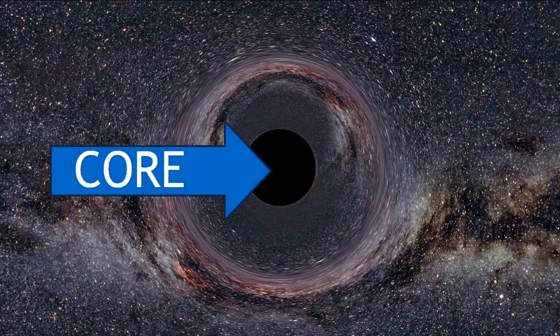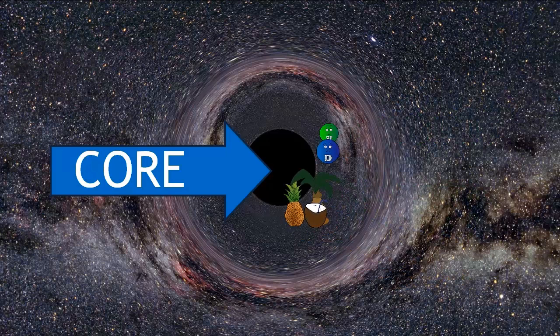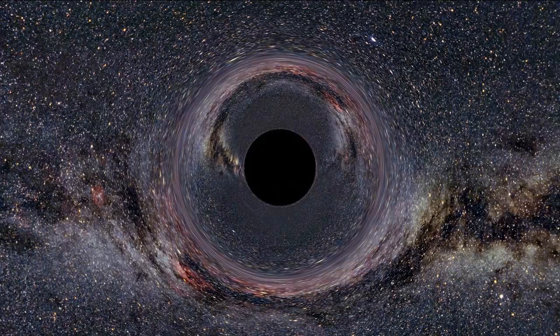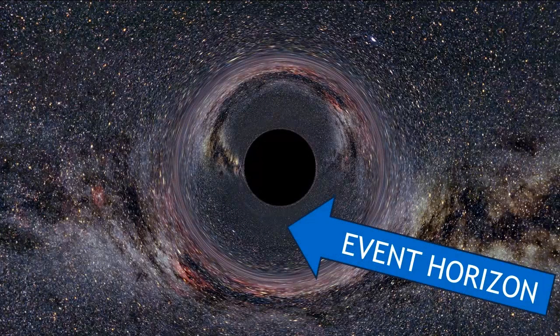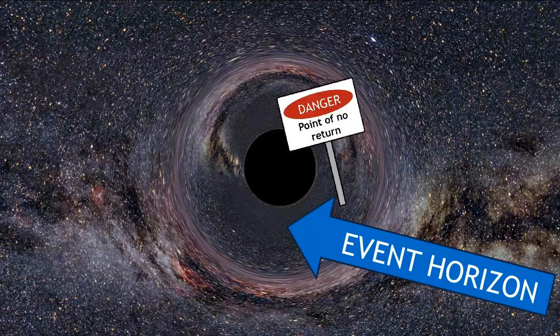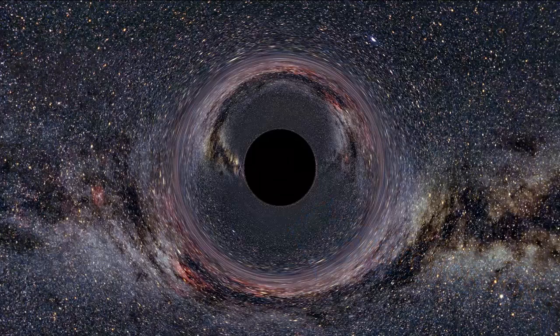The core of a black hole is possibly made up of quarks or other exotic material. At this point, we don't know. Surrounding this core is a mathematical boundary called the event horizon. This boundary is defined as the point of no return. Anything, even light, that passes through it is trapped and will fall into the core. This is the reason that black holes appear black.